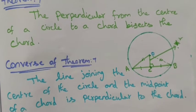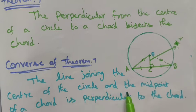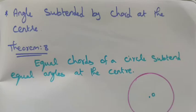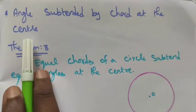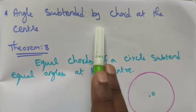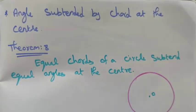The midpoint of a chord is perpendicular to the chord — the line from the center to the midpoint of a chord is perpendicular to that chord. Next, we are going to see the angle subtended by a chord at the center of the circle.